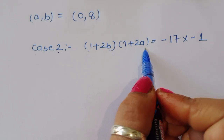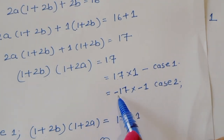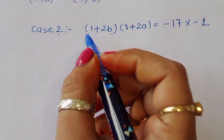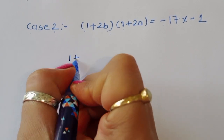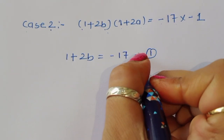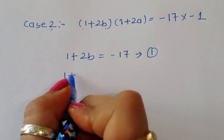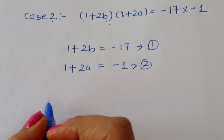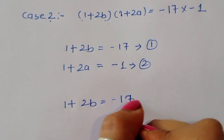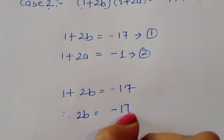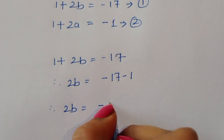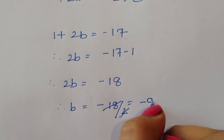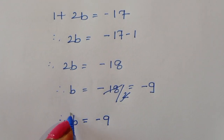In Case 2, (1 plus 2b) times (1 plus 2a) equals minus 17 times minus 1. Comparing both sides, equation 1 gives 1 plus 2b equals minus 17, so 2b equals minus 18, therefore b equals minus 9.